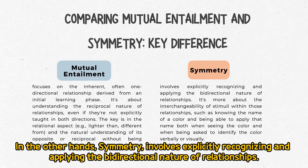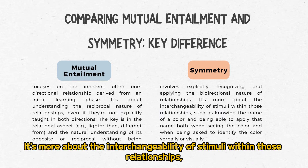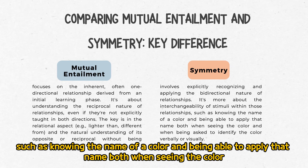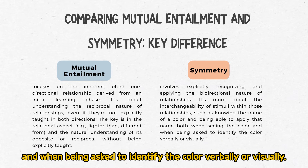On the other hand, symmetry involves explicitly recognizing and applying the bidirectional nature of relationships. It is more about the interchangeability of stimuli within those relationships — such as knowing the name of a color and being able to apply that name both when seeing the color and when being asked to identify the color verbally or visually.